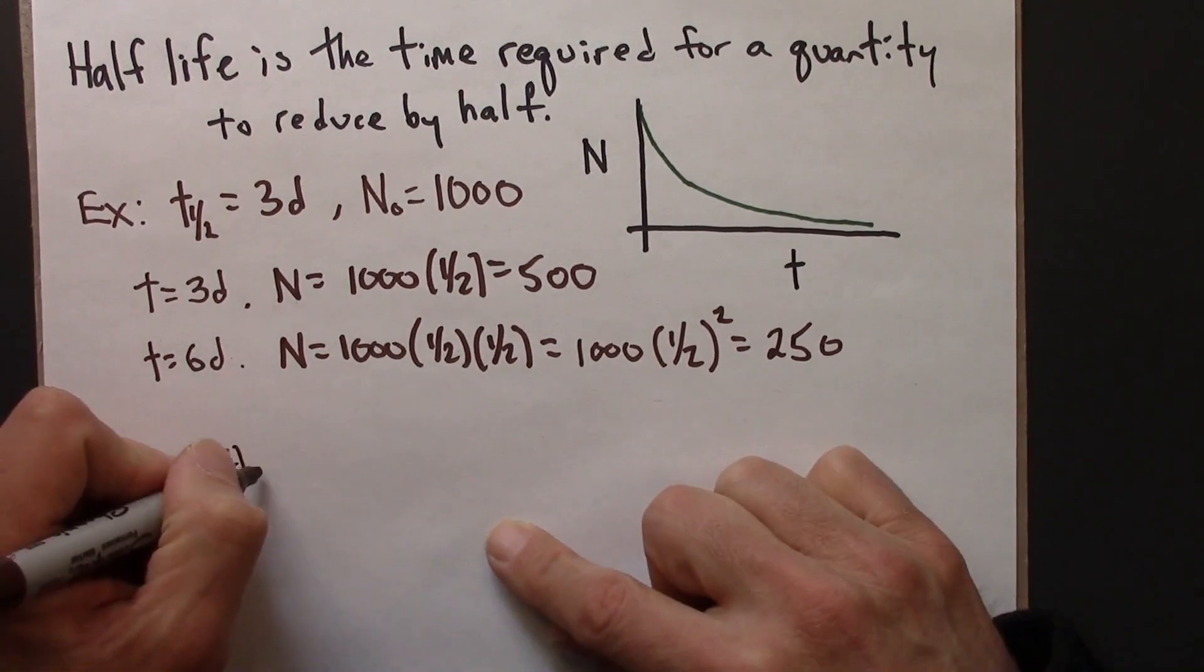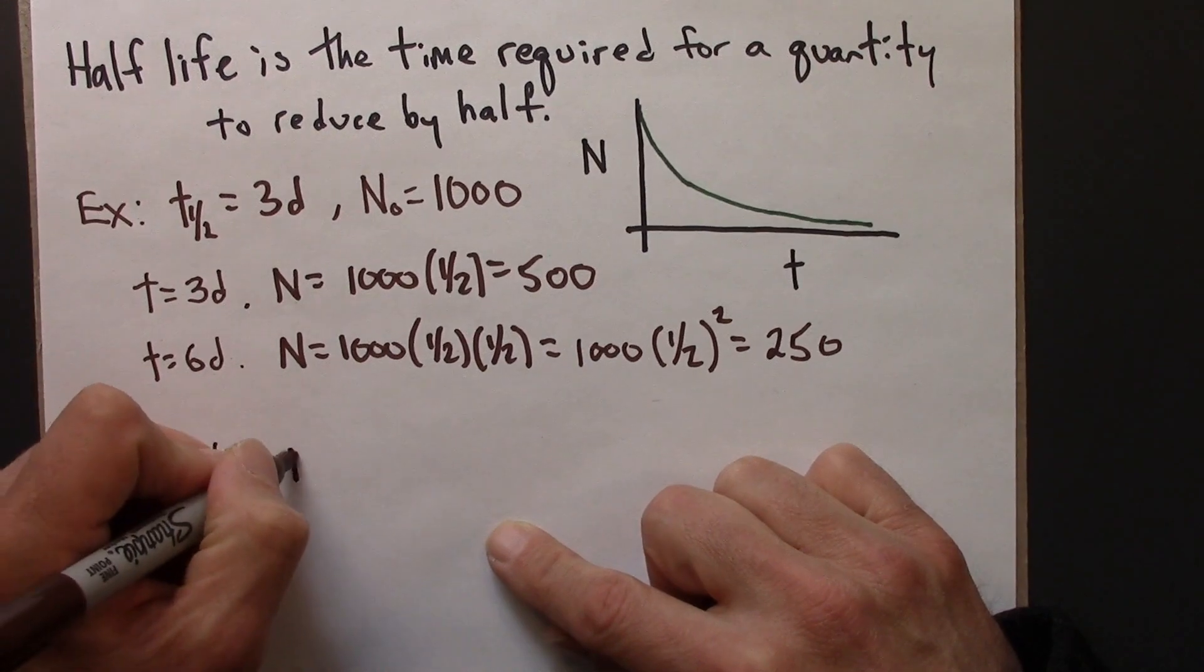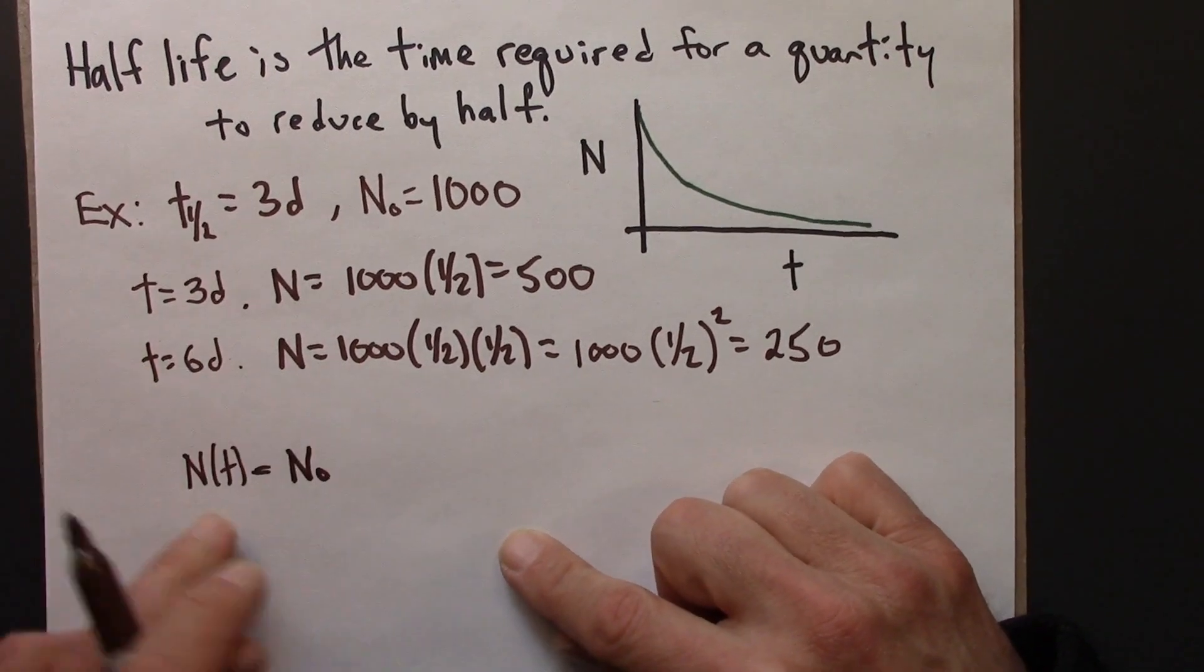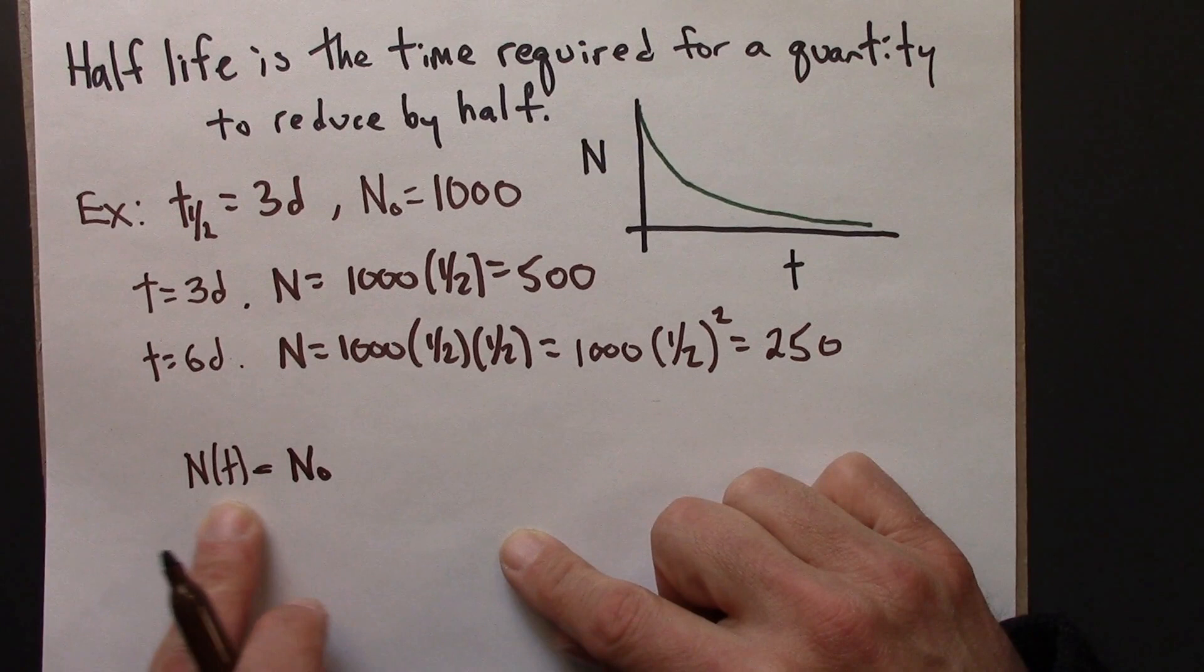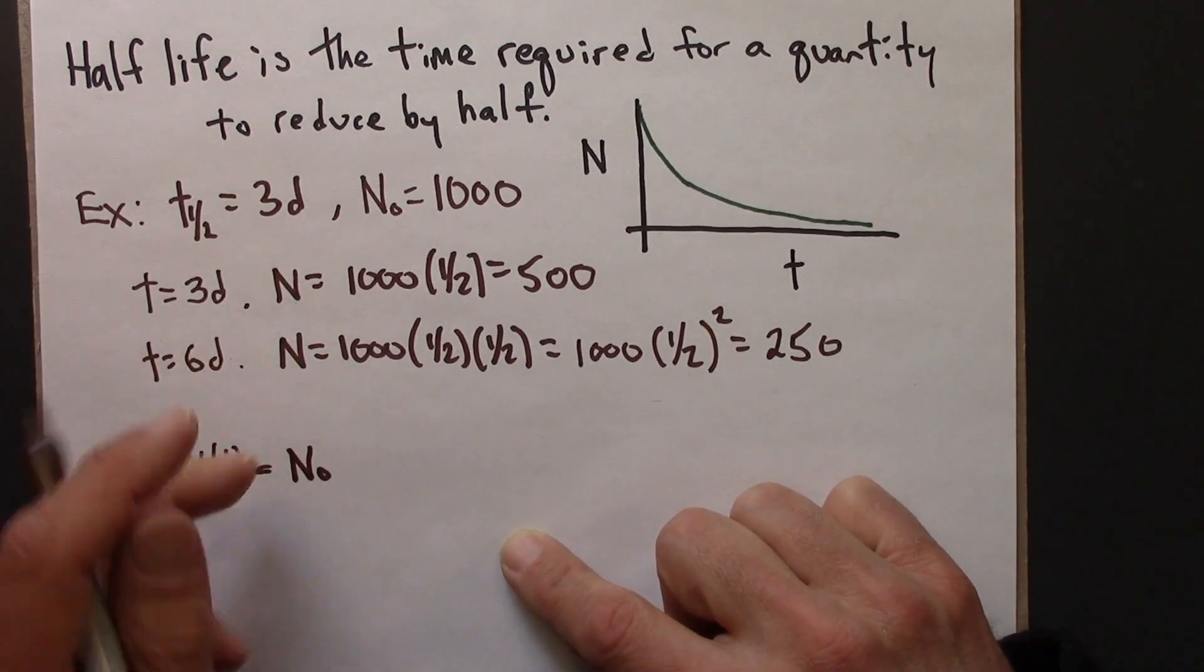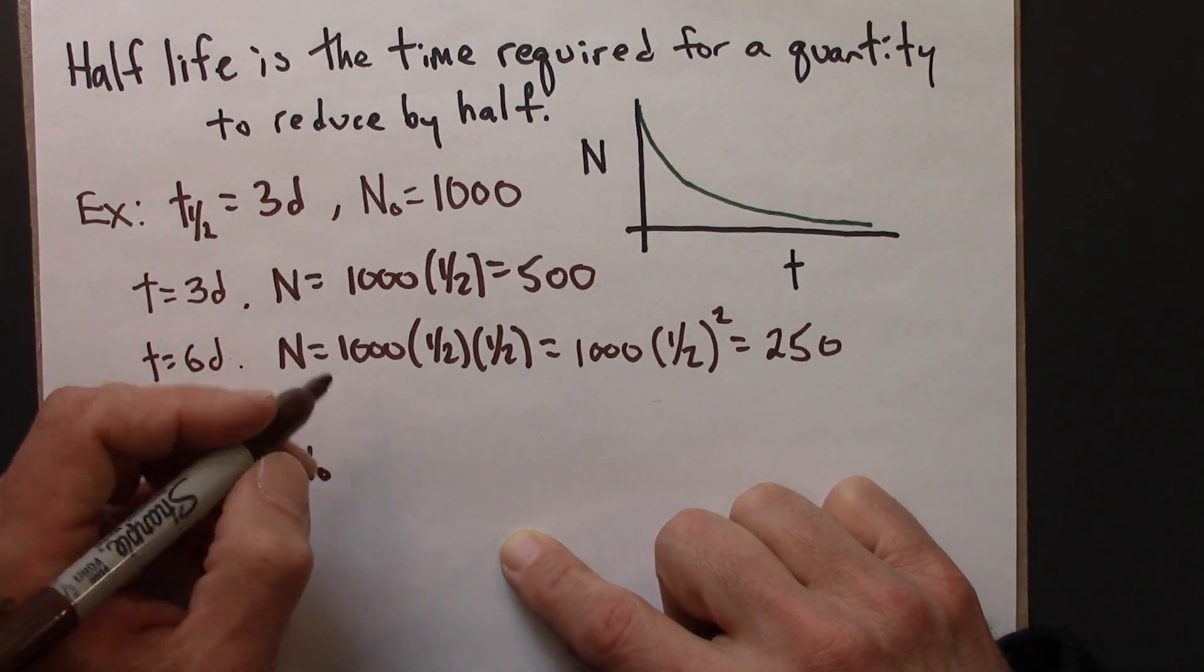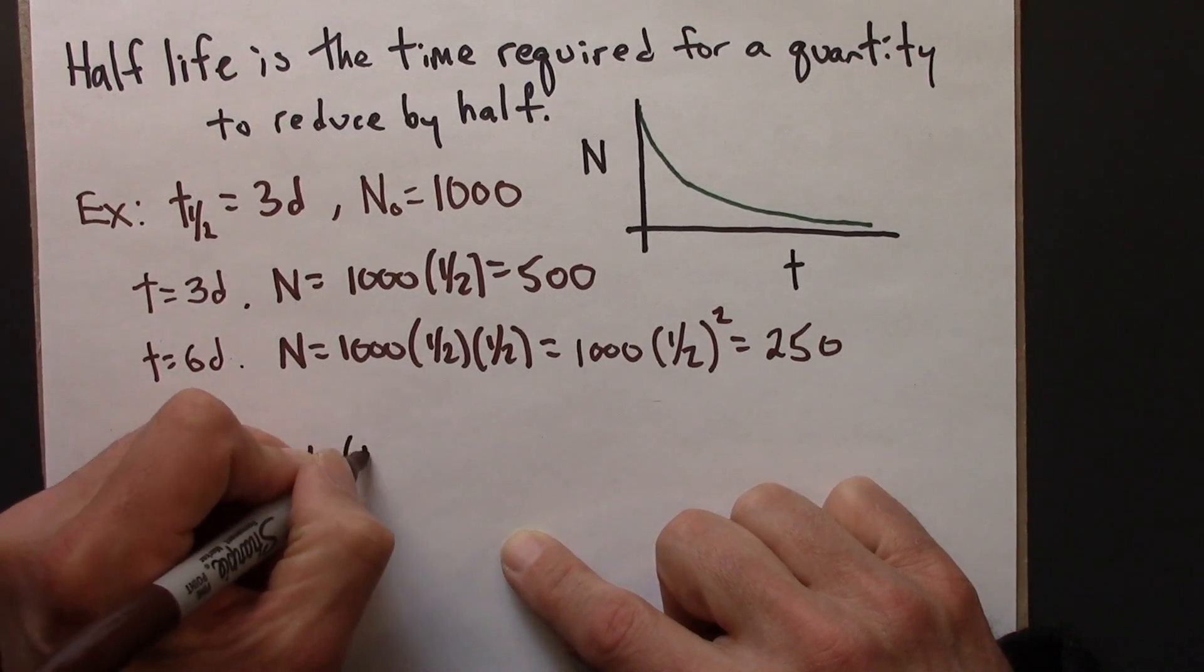So let me write a formula for that. And this is a general formula for exponential decay, expressed in terms of half-life. So N_0 is the original amount. N(t) is the amount at some time t later.